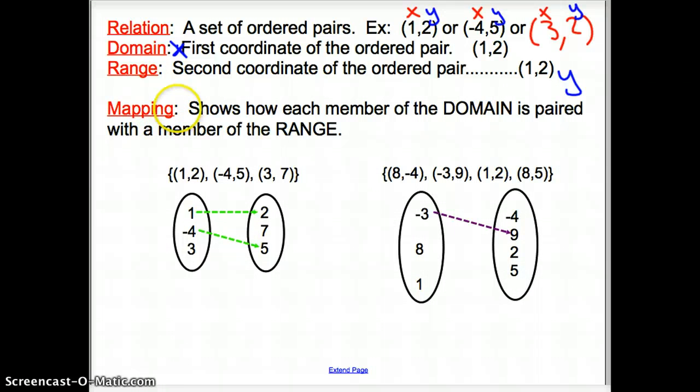Mapping. Mapping shows how each member of the domain is paired with the member of the range. So if we look at our relation here, we have 1 goes to 2. So this would be your x values. This would be your y values. This is x. That is y. 1 goes to 2. Then we have negative 4 goes to 5. And then 3 to 7. That is a mapping. That's how you show what points belong to what. And now over here we have 8 to negative 4. We have negative 3 to 9. 1 to 2. And 8 to 5. All a mapping does is show what points belong to each other.